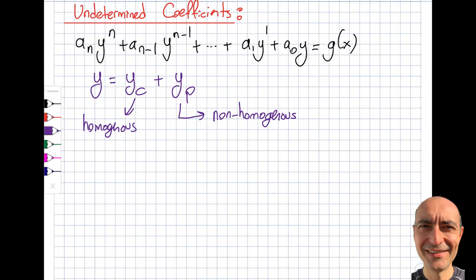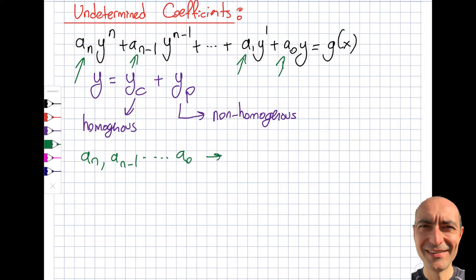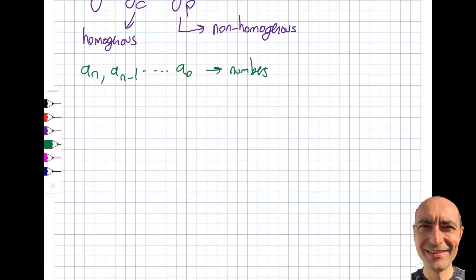Today I will look at undetermined coefficients. I want to re-emphasize that the coefficients a_n, a_{n-1}, all the way to a_0 must be numbers — not functions. If a coefficient is something like sine X, what I'm about to discuss won't apply. Undetermined coefficients is applicable only to certain forms of G of X, so it is not a universal solution. I want to highlight that from the get-go.